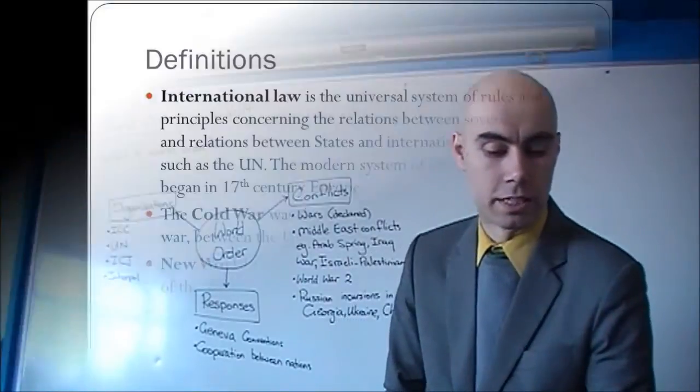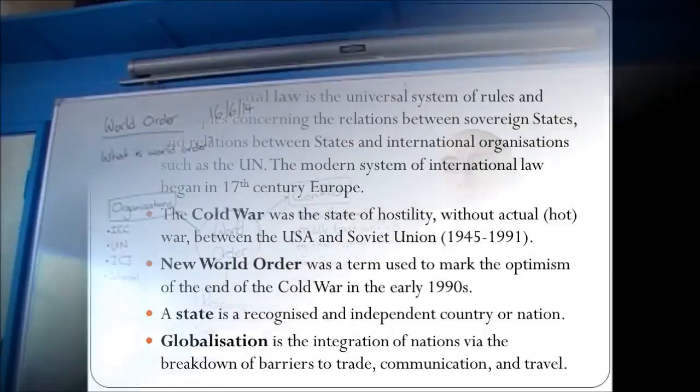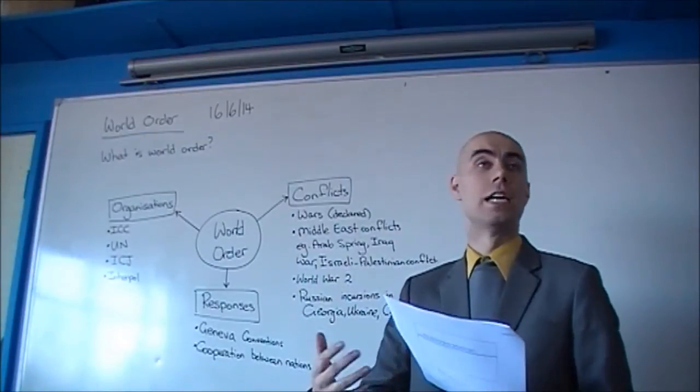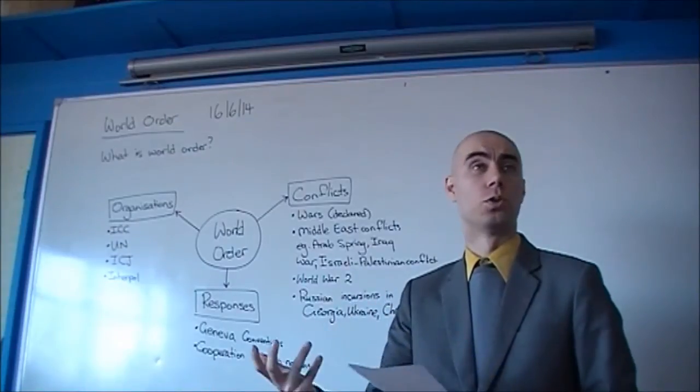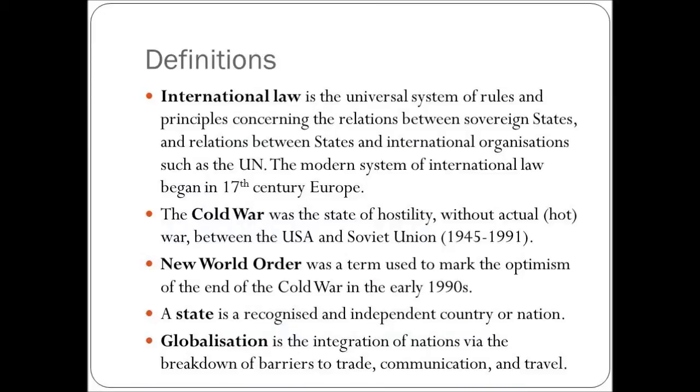So we also have a couple of definitions. The first one is international law. International law is defined as the universal system of rules and principles concerning the relations between sovereign states and relations between states and international organizations such as the UN. So it's not just between two states, it's also between a state and an international organization. The modern system of international law began in 17th century Europe and it now includes almost every country on earth.